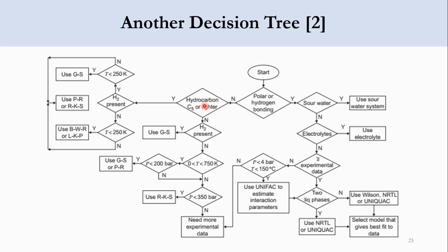Going to the third part, no hydrocarbon or lighters. Check if hydrogen is present. If yes, use GS. If no, check whether the temperature range is between 0 to 750 Kelvin. If yes, check whether the pressure is less than 200 bar. If the pressure is less than 200 bar, use Grayson-Streed or Peng-Robinson.